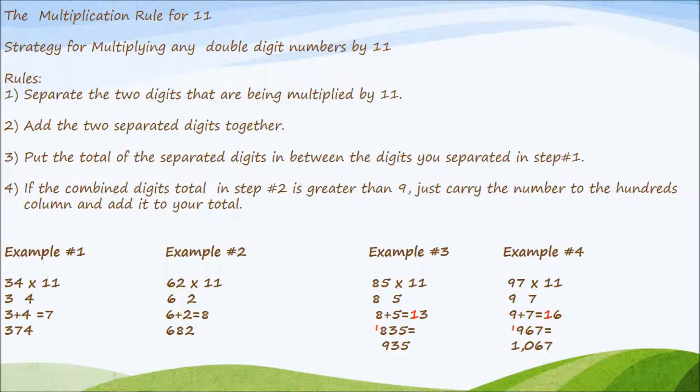Here are the rules. First, you separate the two digits that are being multiplied by 11. Next, you're going to add the two separated digits together. Then you're going to put the total of the separated digits in between the number you separated in step 1. And finally, if the combined digits total in step 2 is greater than 9, just carry the number to the hundreds column and add it to your total. We'll do some examples.